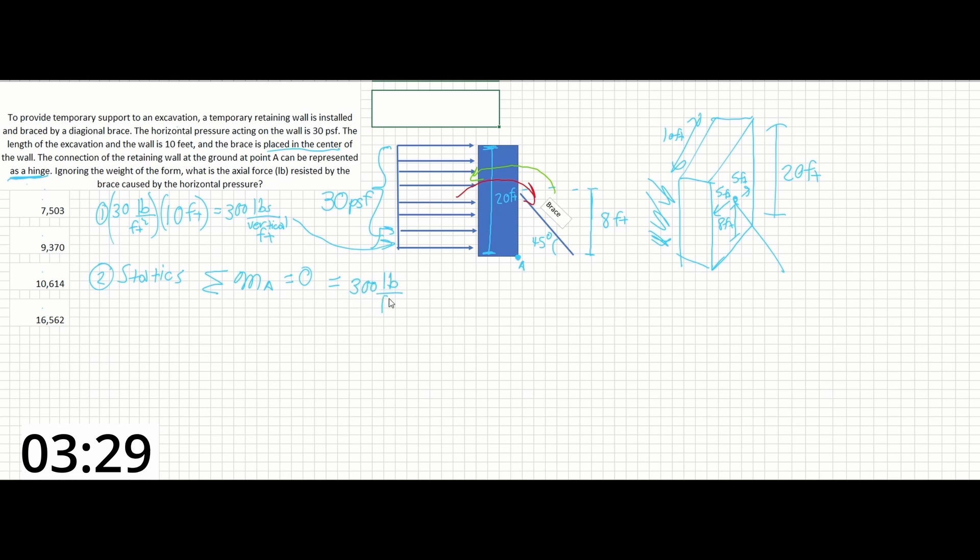So we can begin to extend this problem by saying 300 pounds per vertical foot times 20 feet, times the force location in the rotational moment. In this case, it is going to be half the height of the wall. And as we can see here, this will give us units of pound feet.